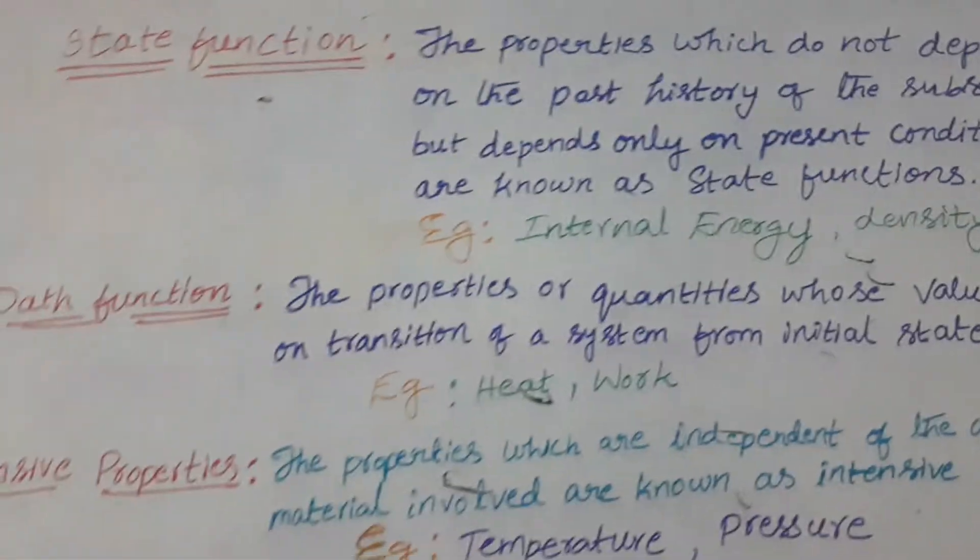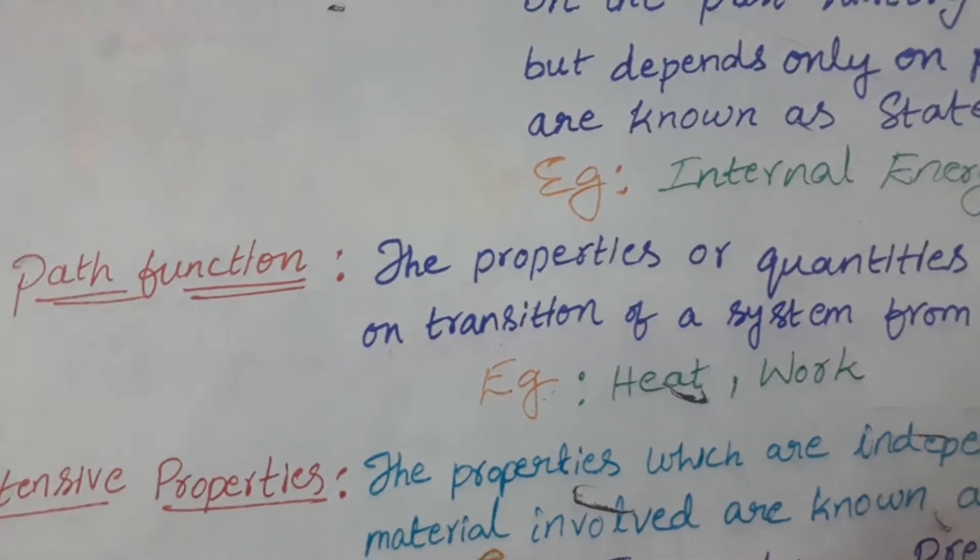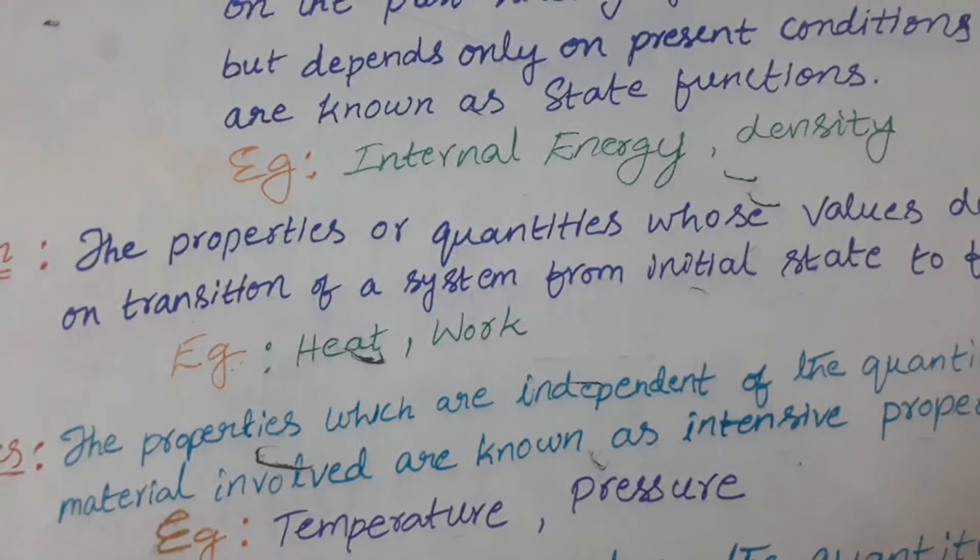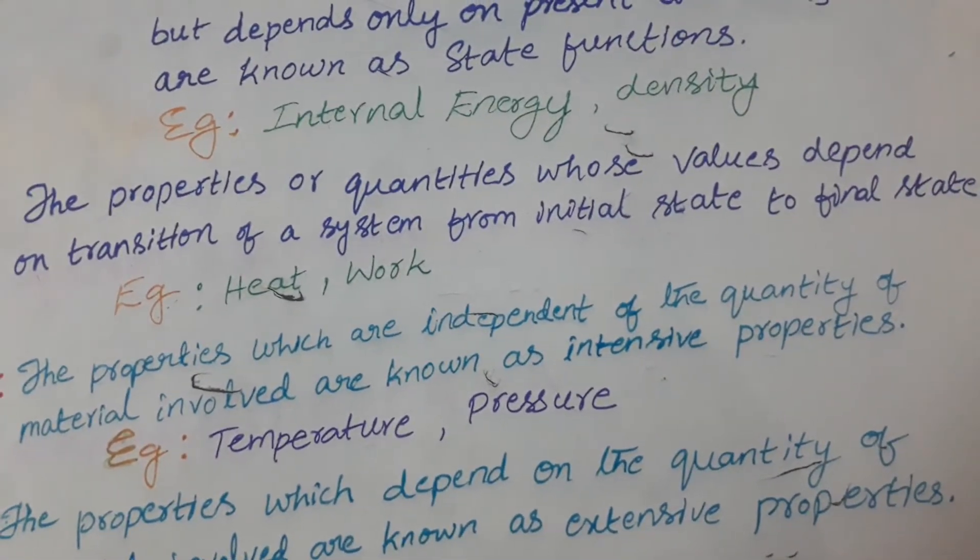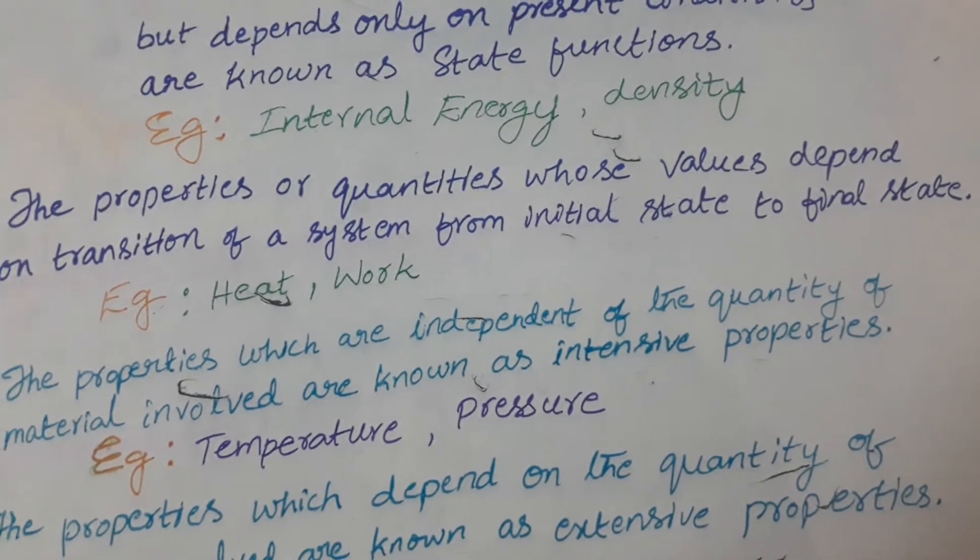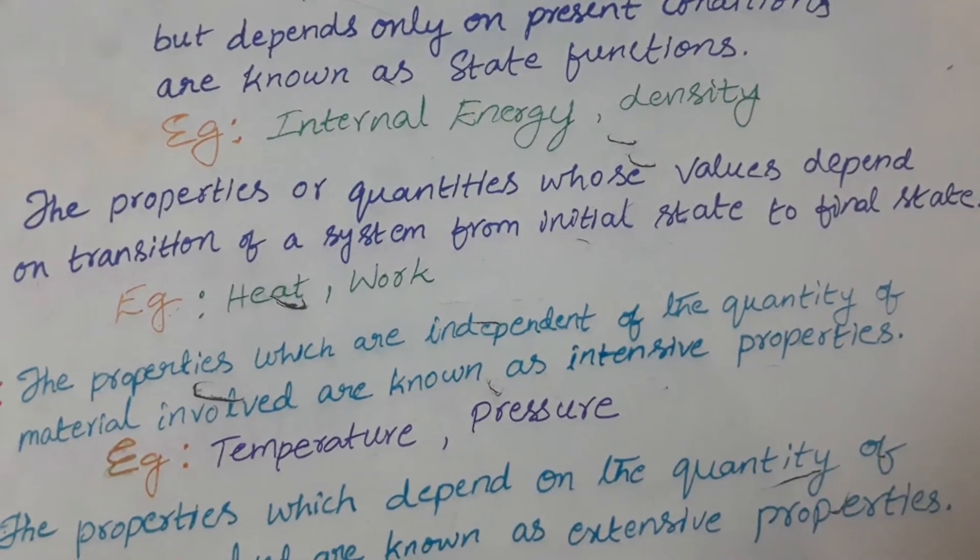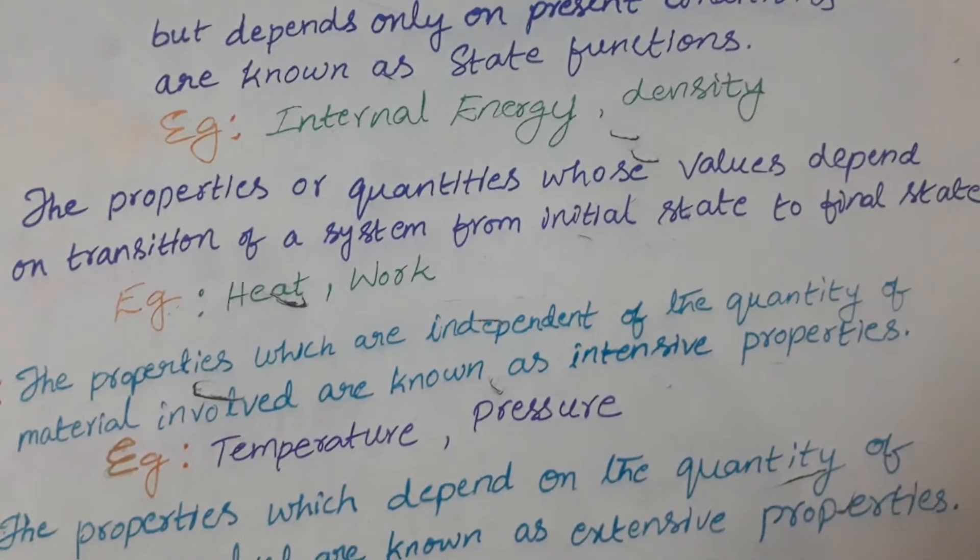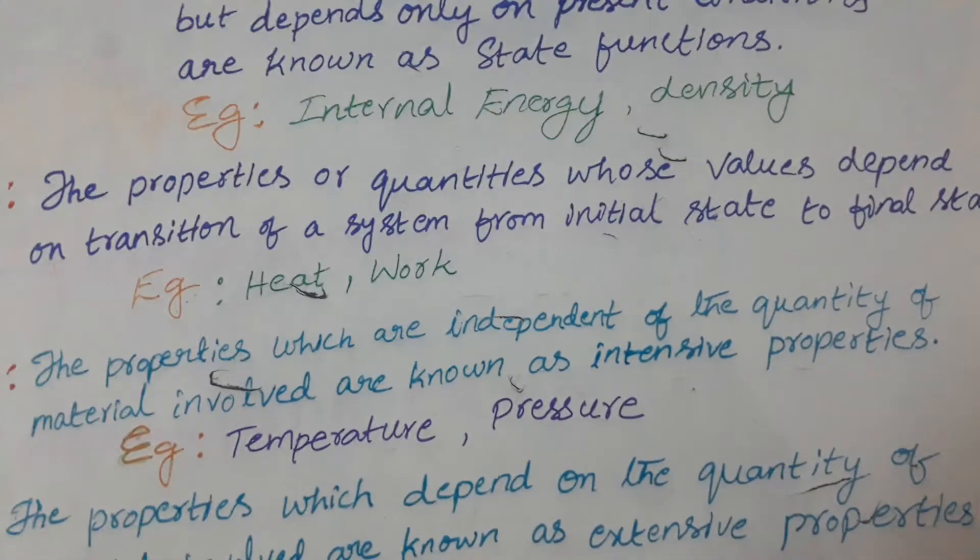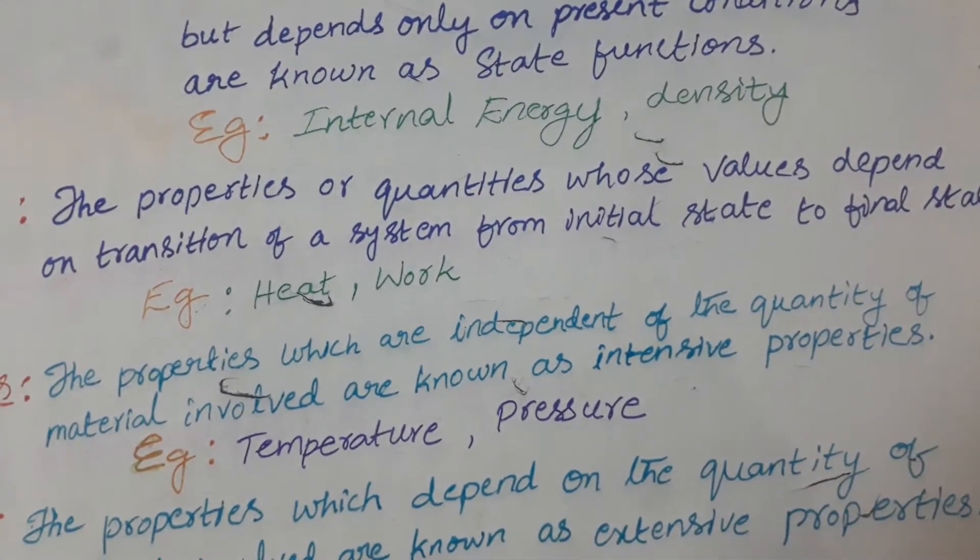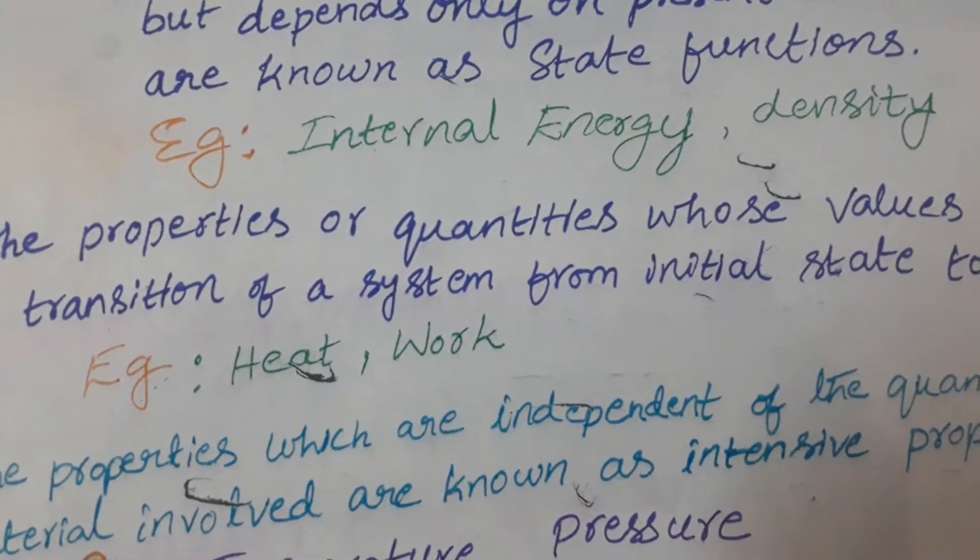The next definition is path function. The path function, we can say, are the properties or quantities whose values depend on the transition of the system from initial state to final state. Simply, the property which depends on the path of the system is known as path function. For example, heat as well as work.